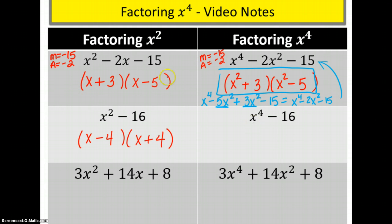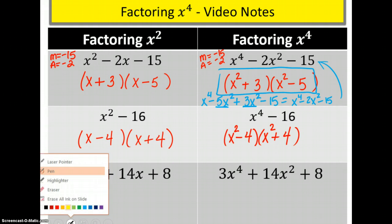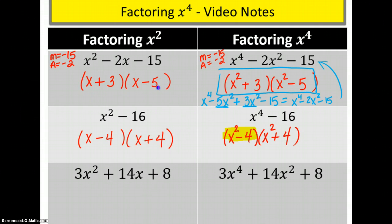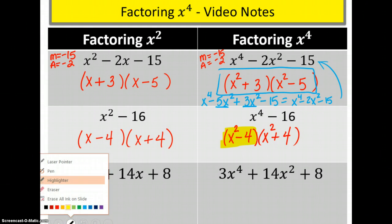We're going to have that same concept over here, x to the fourth. x to the fourth minus 16 is going to factor just like what we did on the left. Except instead of x and x, it's going to be x squared and x squared. And still it's going to be the minus 4 plus 4. However, now we are not finished. This is not completely factored. Why? Because we have right here another case of dots.